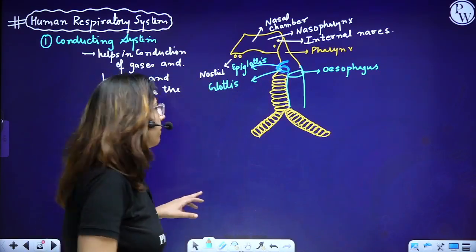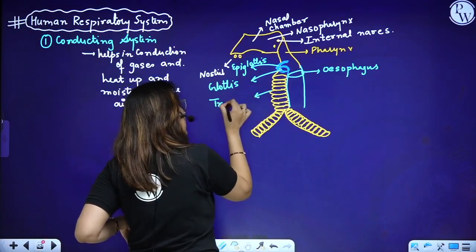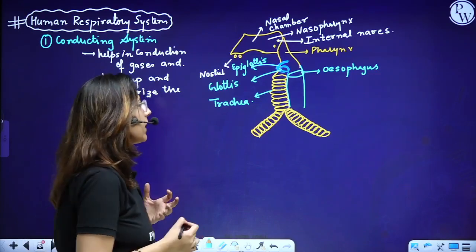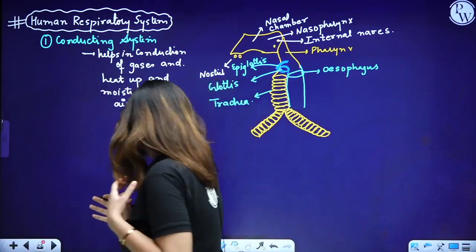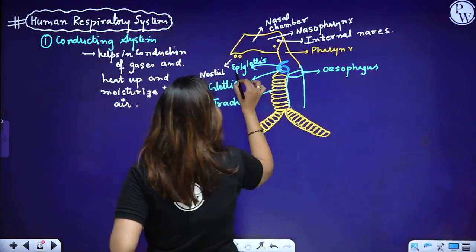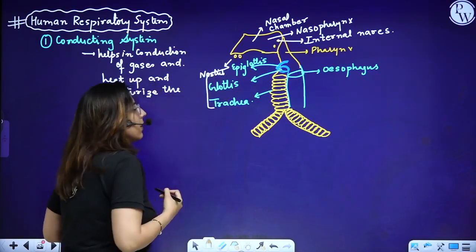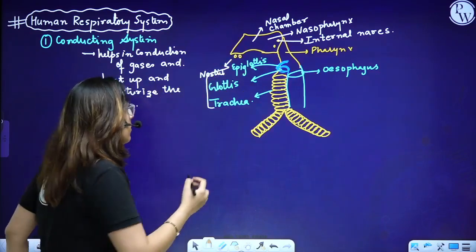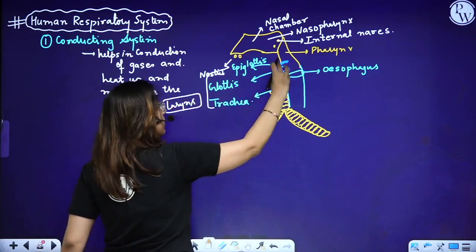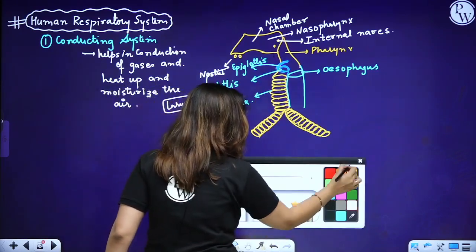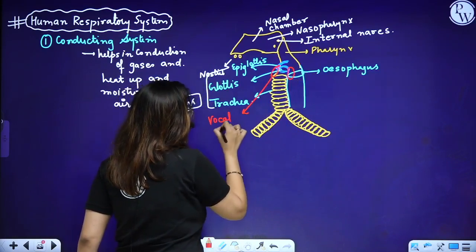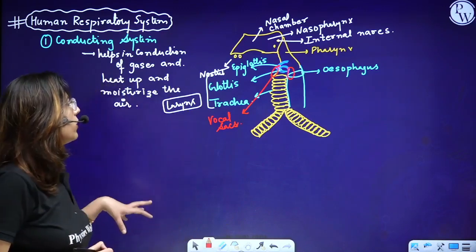The larynx contains vocal sacs which help us talk. The larynx region, including the supraglottis, glottis, and subglottis, all constitute the larynx. I can demonstrate with a bottle: the hole of the bottle represents the glottis, and the flap-like covering over it represents the epiglottis, which prevents water — or food — from entering the trachea.